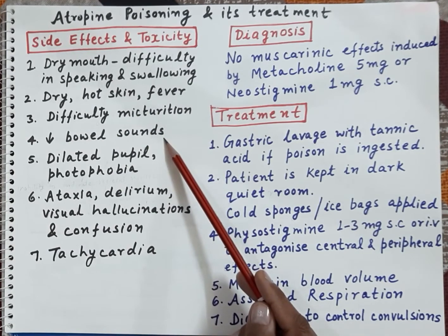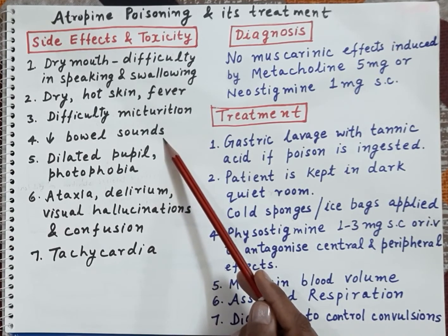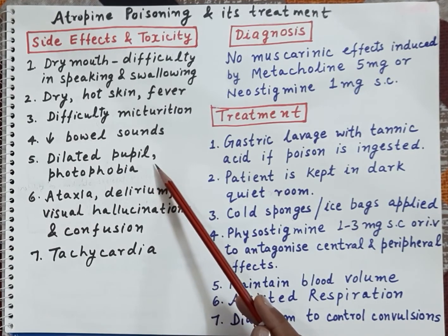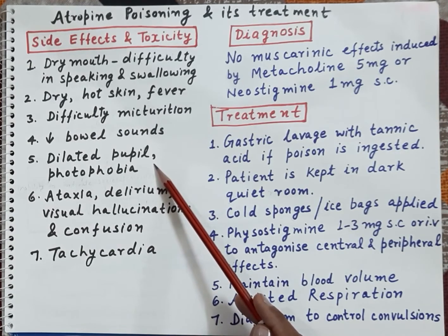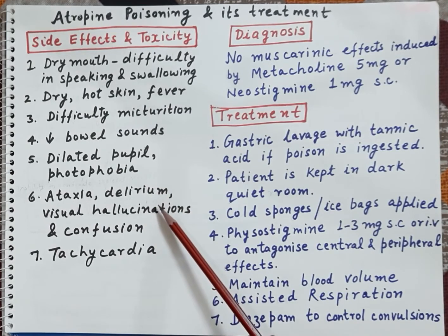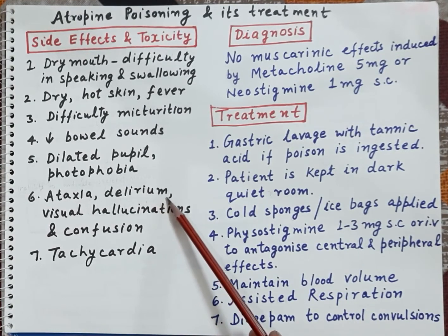Atropine also reduces peristalsis in the GIT, and therefore there is a fall in bowel sounds. Atropine poisoning causes constipation. Further, atropine causes dilation of the pupil — it induces mydriasis — and because of mydriasis there is photophobia.